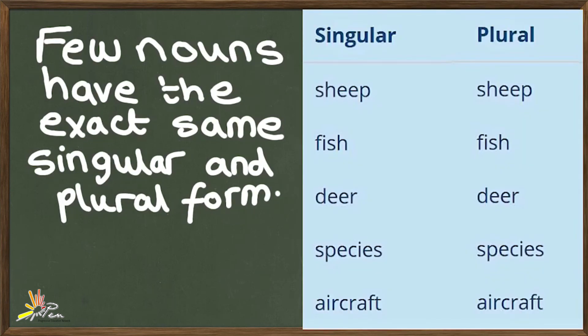These words are spelled and pronounced exactly the same way in both their singular and plural form. Sheep is singular as well as plural. Same is the case for fish, deer, species, and aircraft. Take a moment to learn and understand these words.